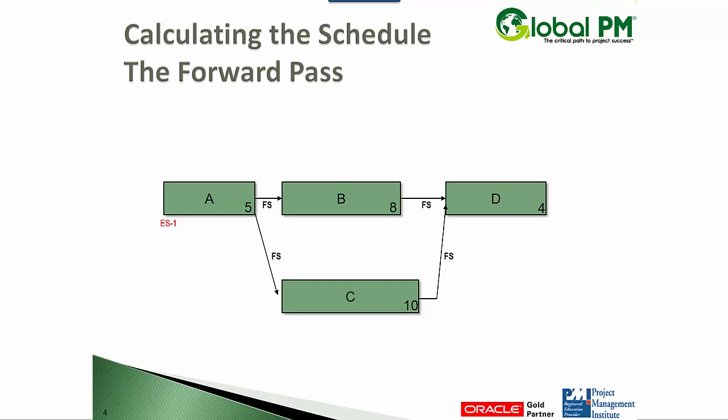ES stands for early start. It's day one. Let's call it Monday. So if that activity takes five days, and the durations are reflected in the bottom right-hand corner of each node, each activity, it starts on Monday. It takes five days. When does it finish? It finishes on day five, which is Friday.